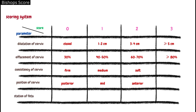For station of the fetal head: a station of minus 3 is given a score of 0; a station of minus 2 is given a score of 1; a station of minus 1 or 0 is given a score of 2; and a station of plus 1 or plus 2 is given a score of 3.